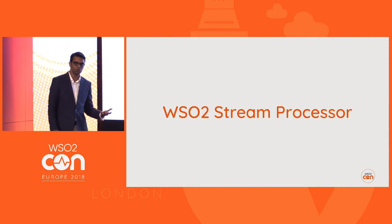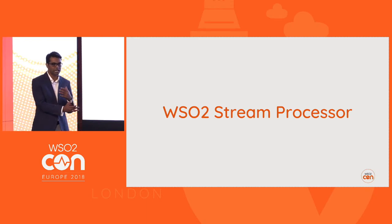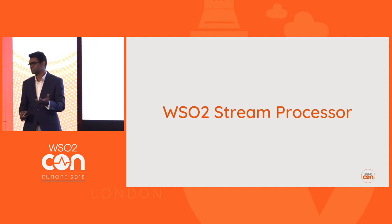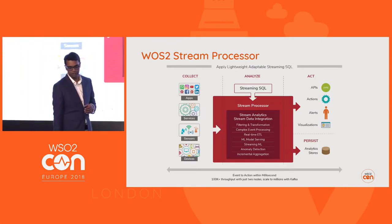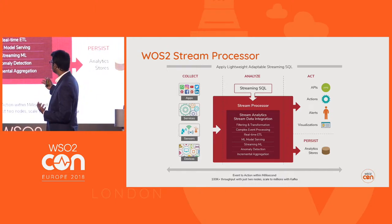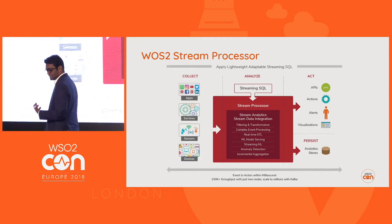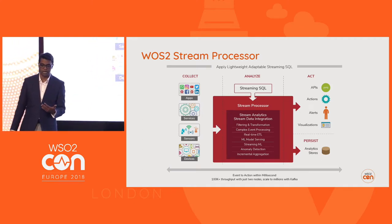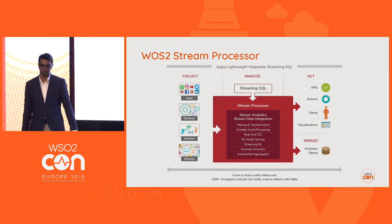What WSO2 Stream Processor tries to do is balance streaming SQL capabilities while solving these challenges. At a high level, it can collect data, do streaming analytics, streaming data integration, make predictions, send via APIs, call actions, send alerts, do visualizations, and persist data to a store.